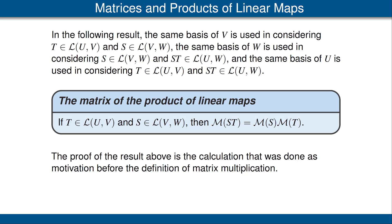Now we have the theorem that if T is a linear map from U to V and S is a linear map from V to W, then the matrix of ST is equal to the matrix of S times the matrix of T. At this point this theorem is no surprise — we defined matrix multiplication to force this to be true, and we've really already done the proof. The proof is just the calculation we did as motivation for how to define matrix multiplication.